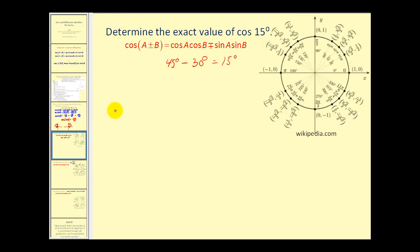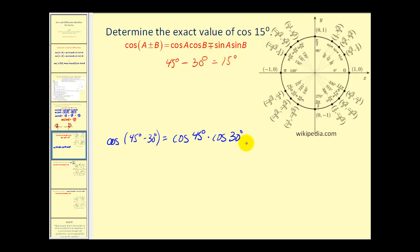Setting this up: the cosine of forty-five degrees minus thirty degrees equals cosine a cosine b, which is cosine forty-five degrees times cosine thirty degrees. Since we use the subtraction sign on the left, we use an addition sign in the identity. Then it's plus sine a times sine b, or the sine of forty-five degrees times the sine of thirty degrees. Now we fill in these values, find the products, and then find the sum.